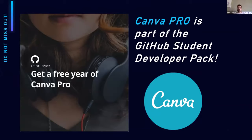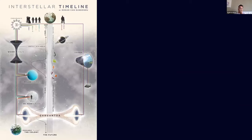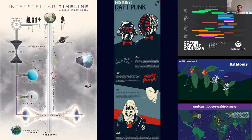Canva is my favorite tool for graphic manipulation — it's a browser-based web application. If you have the GitHub Student Package, you get Canva Pro for free for a year. If you'd like to create an infographic or infographic video for your project, it's going to be super useful. Infographics represent information with the help of charts, graphs, and pictures, and it's really easy with Canva. You go ahead, find a template, add your visuals, and customize it. Examples include an Interstellar Timeline, History of Daft Punk, or Coffee Harvest Calendar — all drawn from Canva templates.